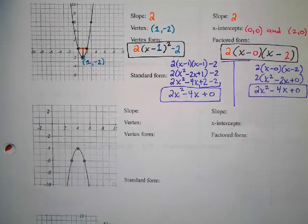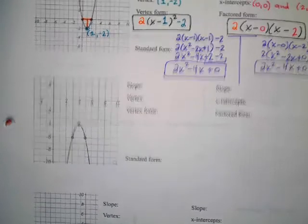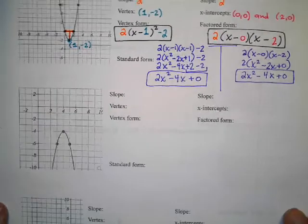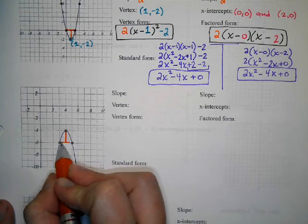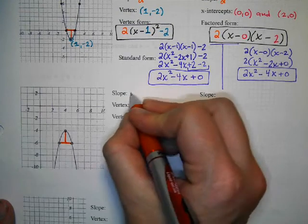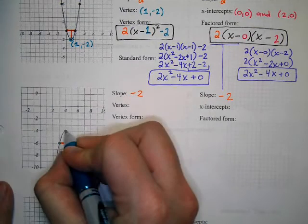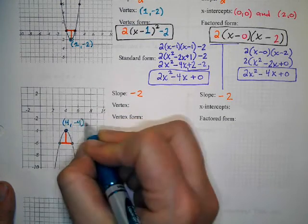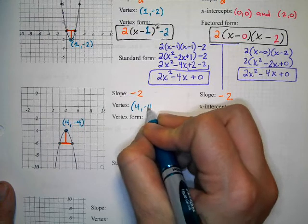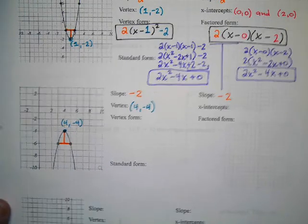Try again. Chromebooks should be away. Phones should be away. What is the slope for this graph? Negative 2. Why is it negative 2 instead of a positive? Good. It's going down. Now I'm going to find the vertex, which is at 4, -4.